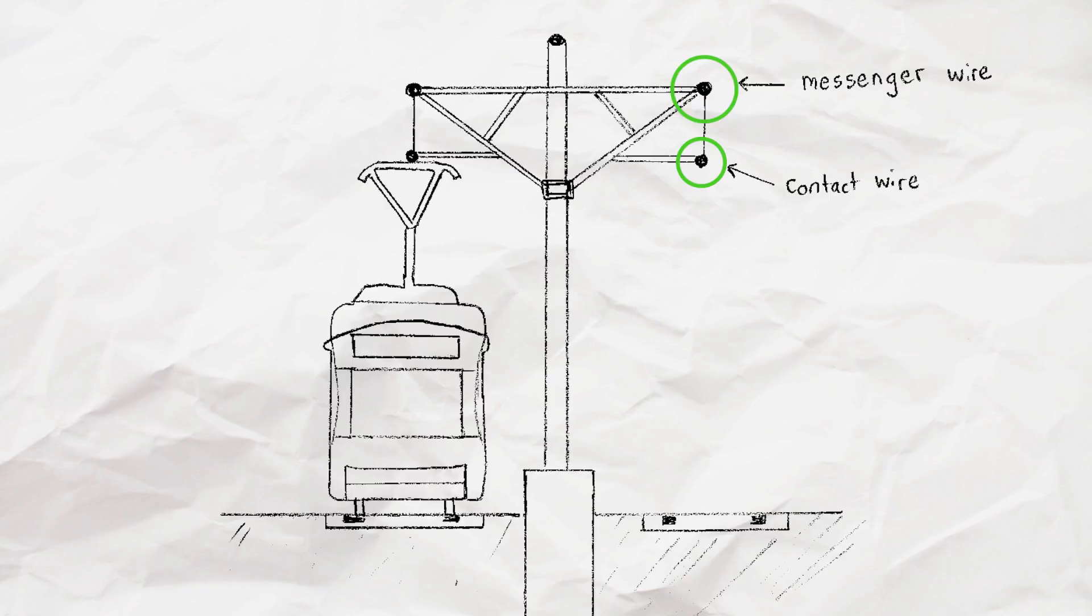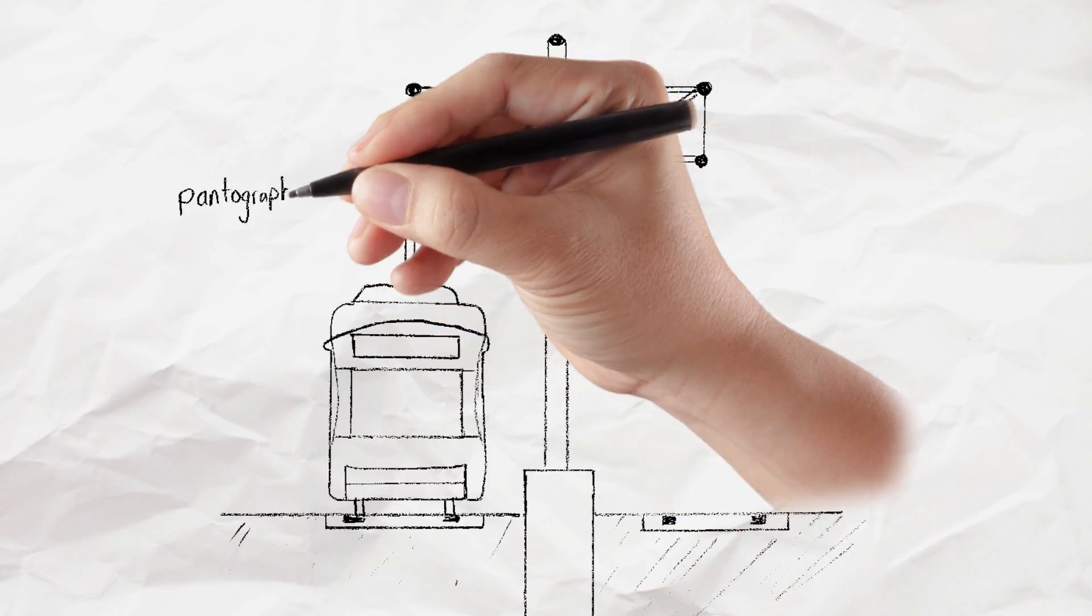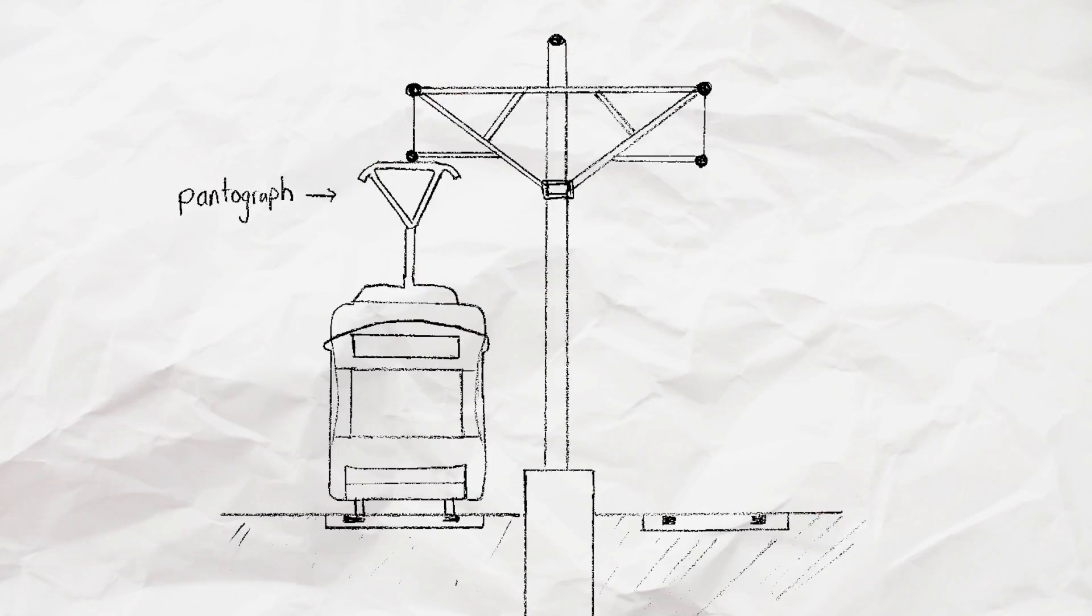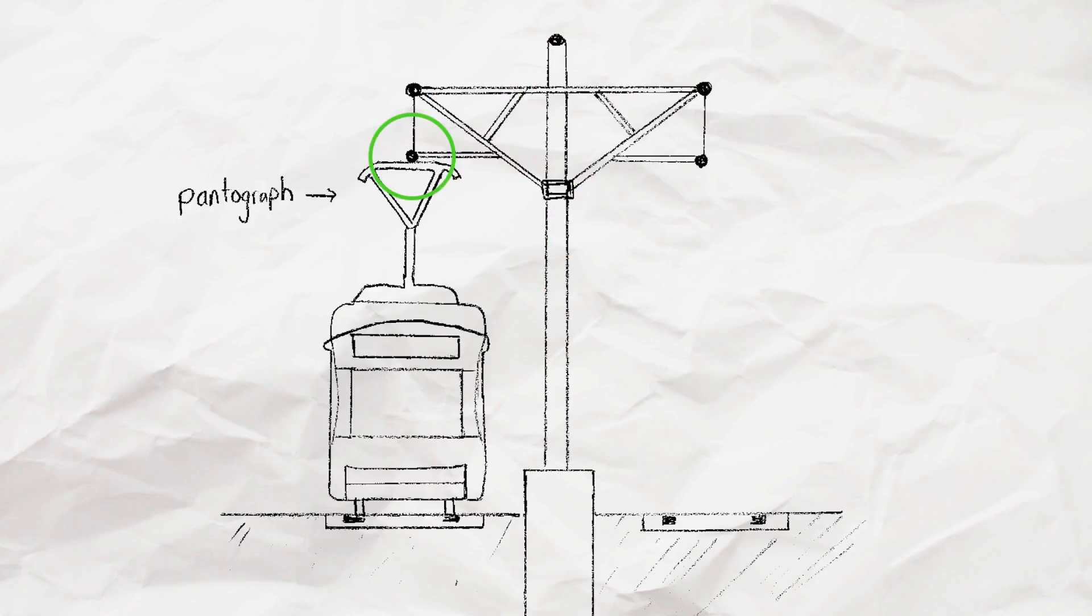To transfer electricity from the contact wire to the train, ION vehicles are equipped with a pantograph that sits on the top of each train. The pantograph looks a little like a coat hanger. This pantograph presses against the contact wire. This is where power is transferred to the train.